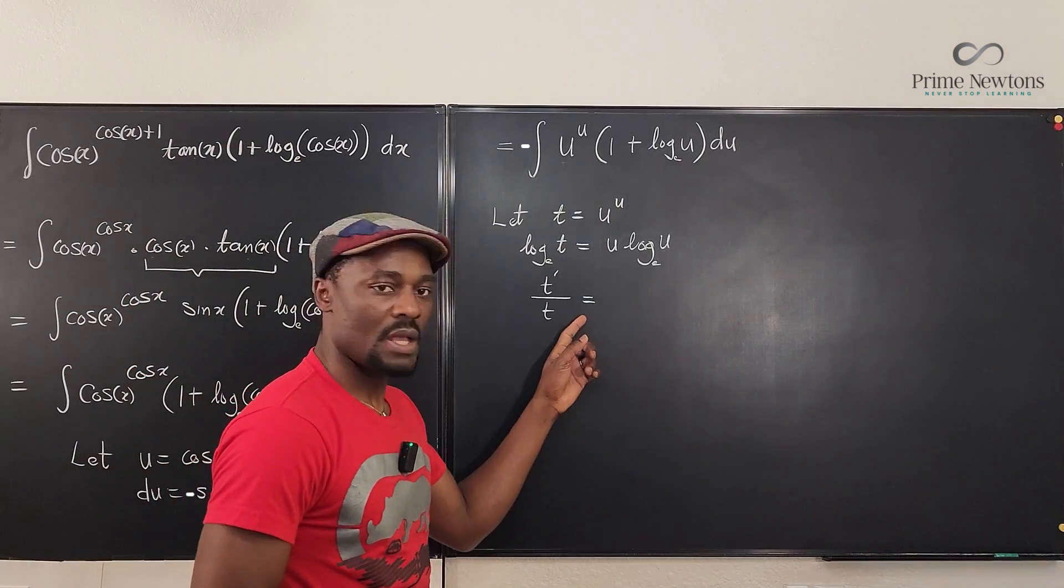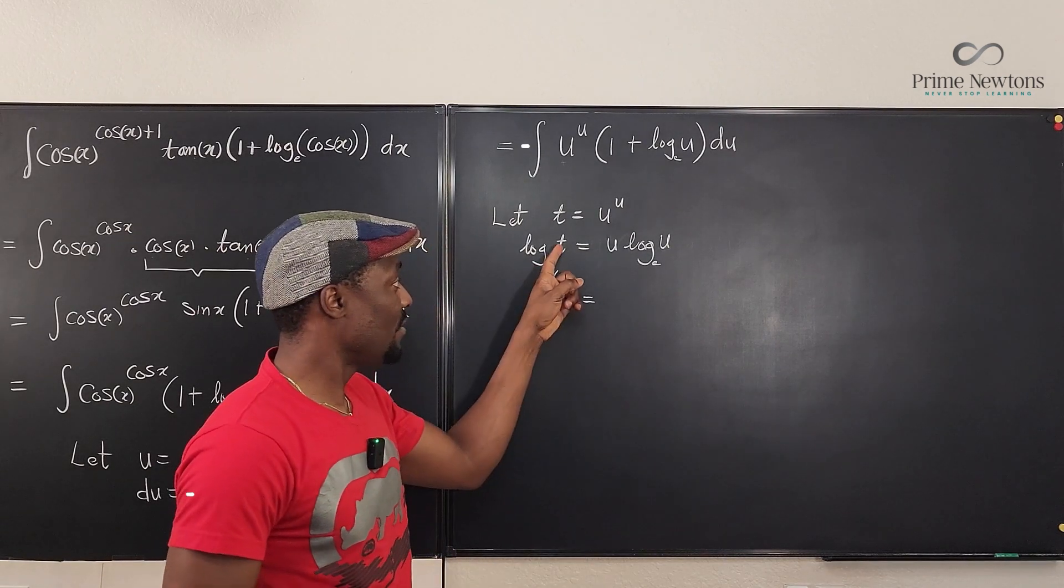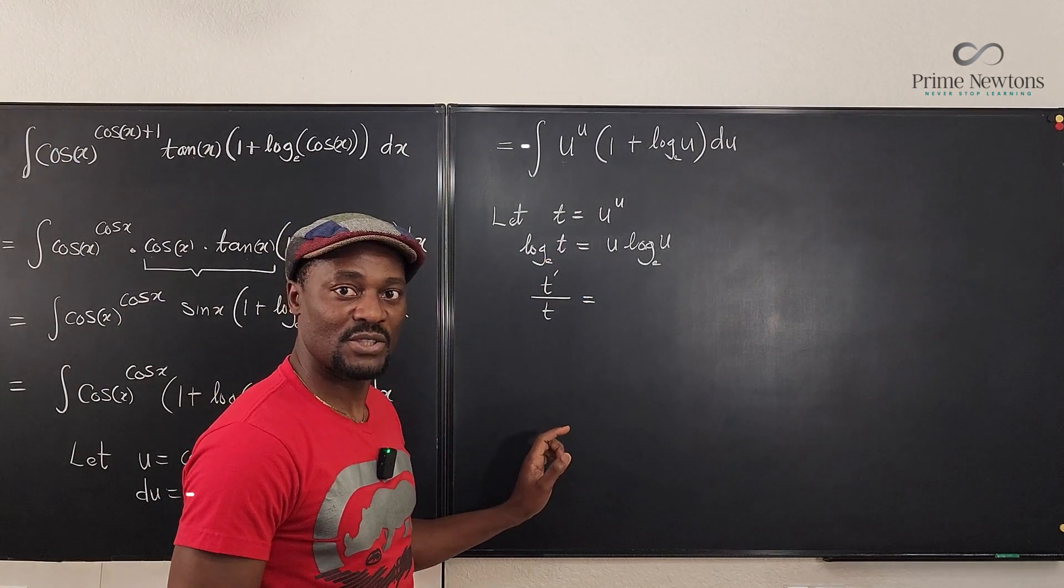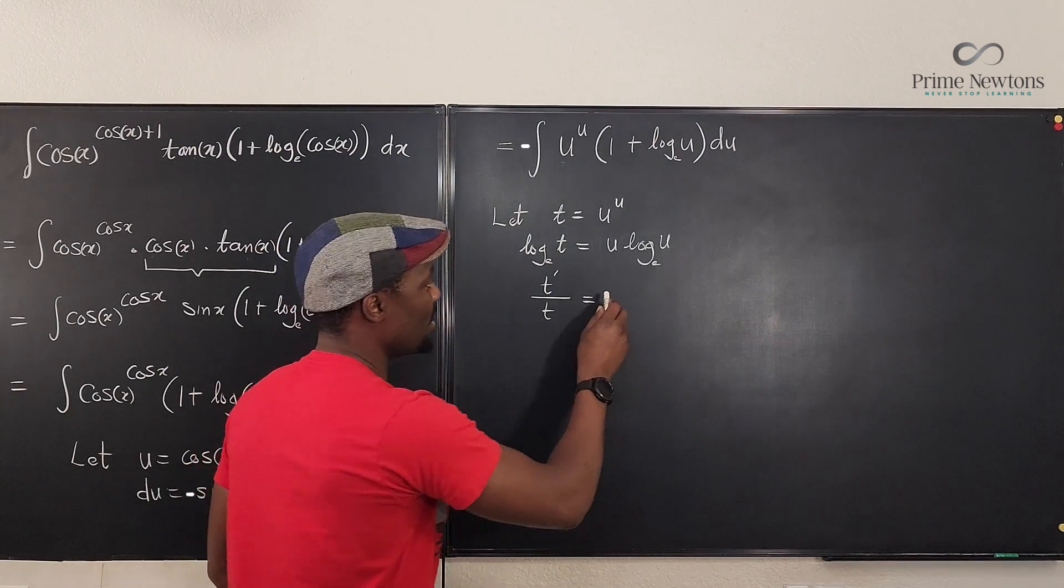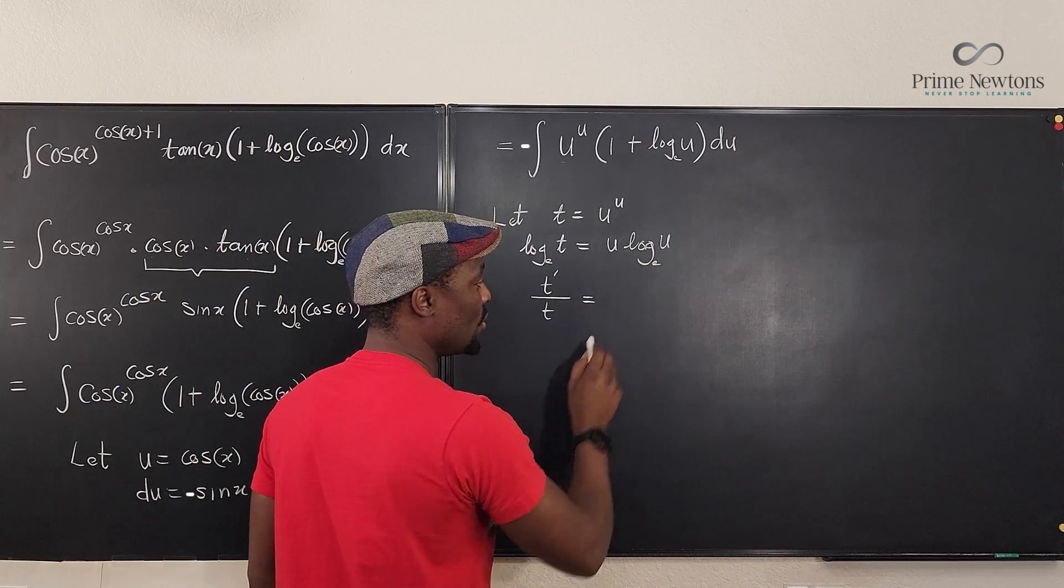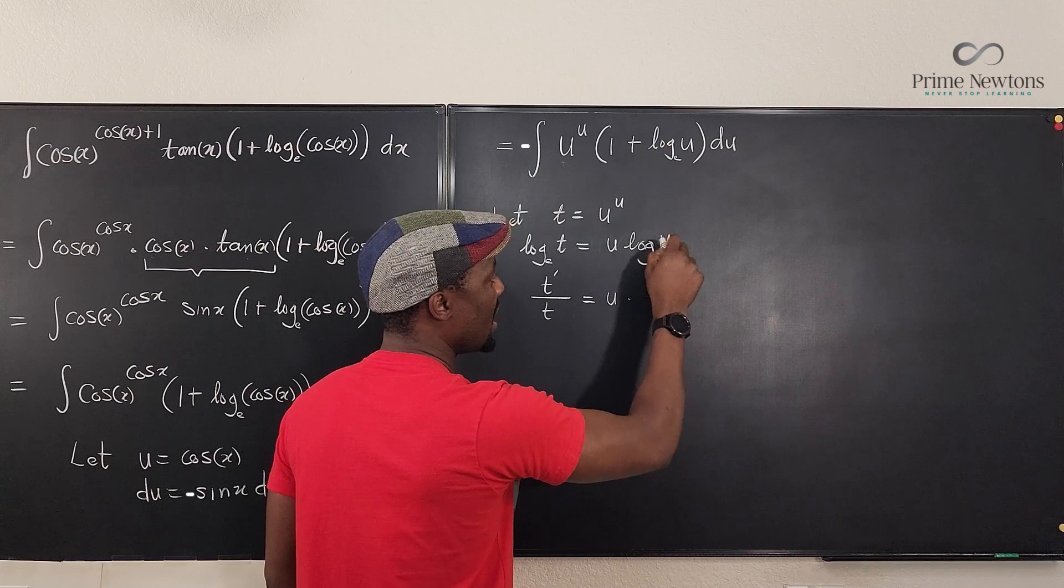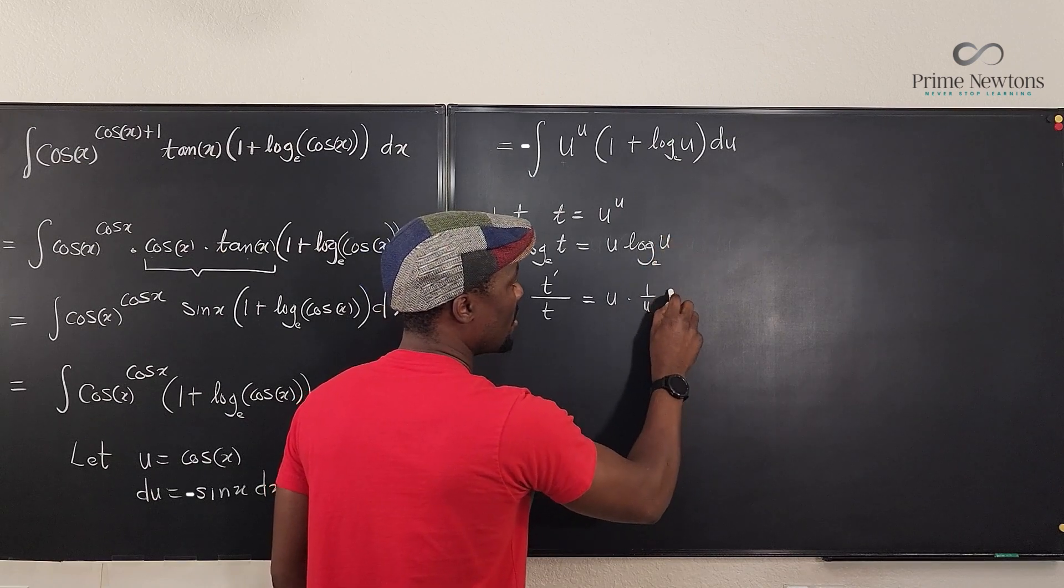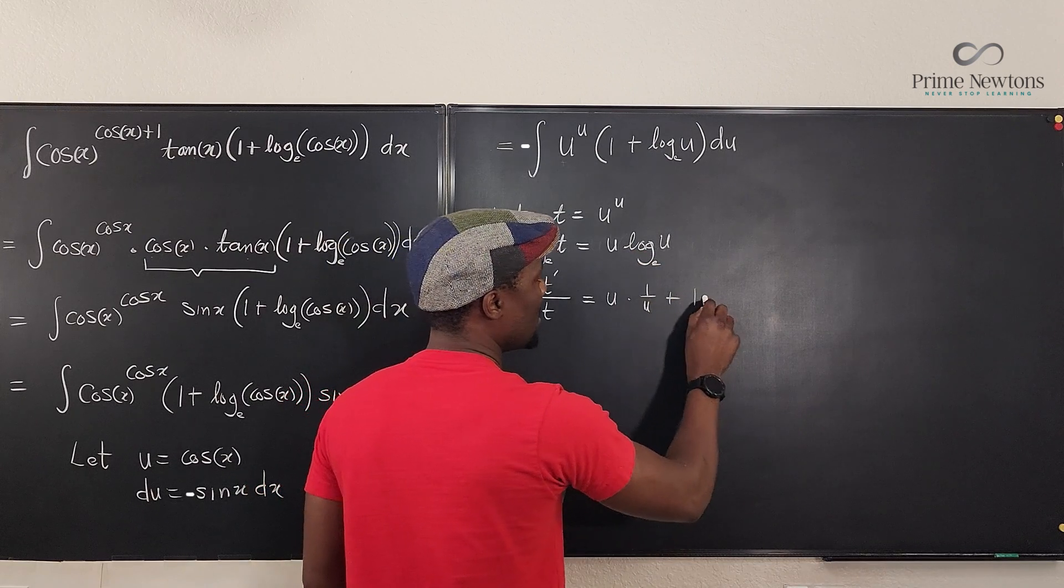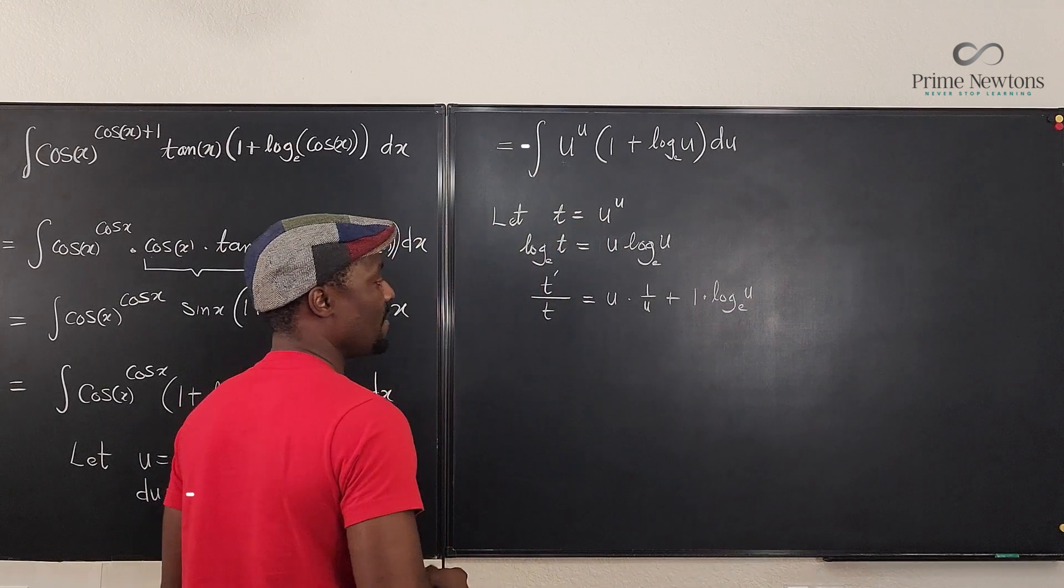So remember when you take the derivative of a natural log function, it's whatever is inside the derivative of what's inside over what's inside, which is what I just did now. Now this would be equal to, if you differentiate this, what do you get? You're going to get, applying the product rule, you keep the first, you differentiate the second. If I differentiate ln of u, I get one over u plus you differentiate the first and you keep the second, which is ln of u, which I'm writing as log of e. Log base e.